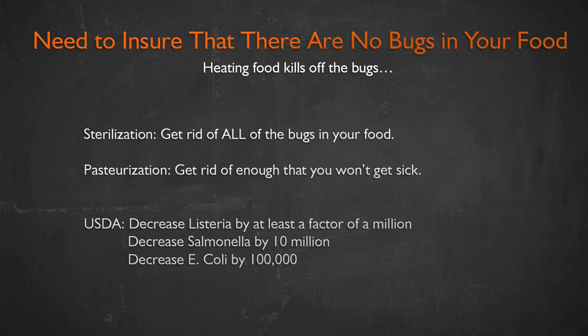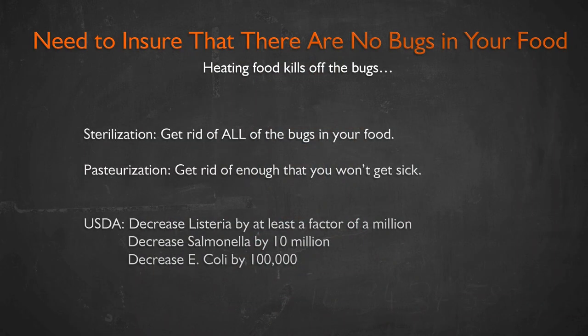These facts are important for understanding food safety protocols. There are two ways to eliminate microbes: sterilization, which kills all microbes, and pasteurization, which decreases the number substantially below a safe threshold. In the United States, the USDA has standards: for Listeria you must decrease the count by a factor of one million; for Salmonella, by a factor of 10 million; and for E. coli, by a factor of about 100,000.